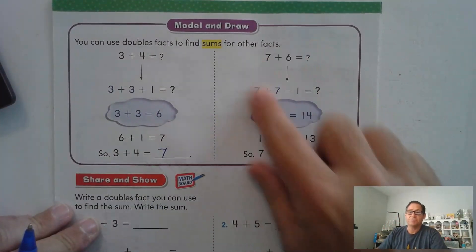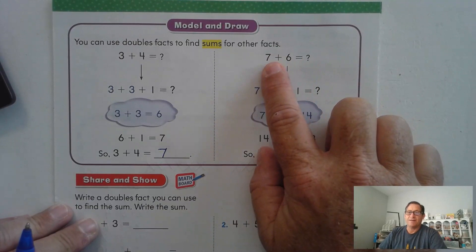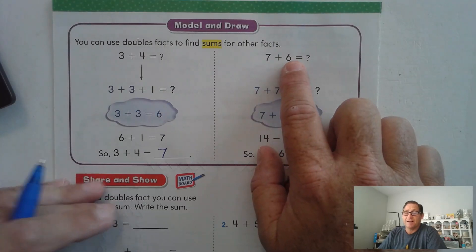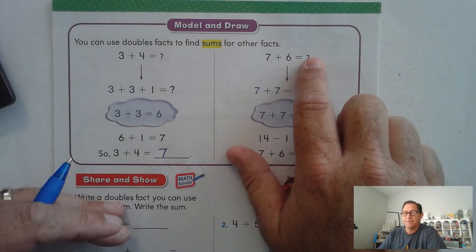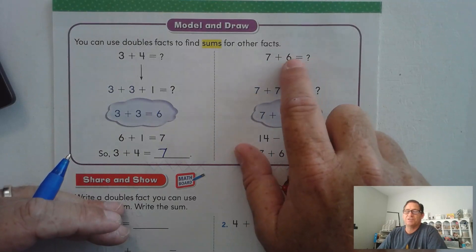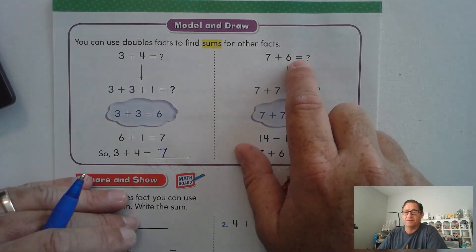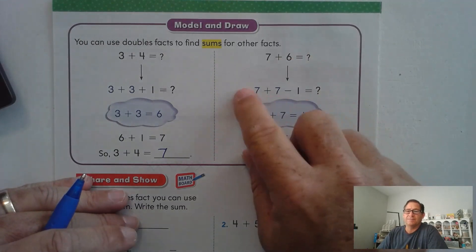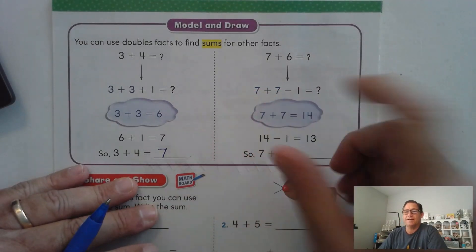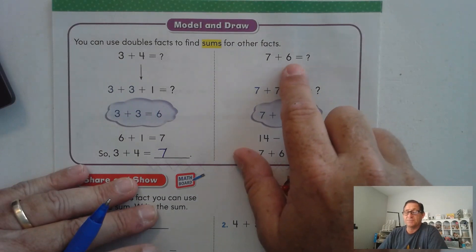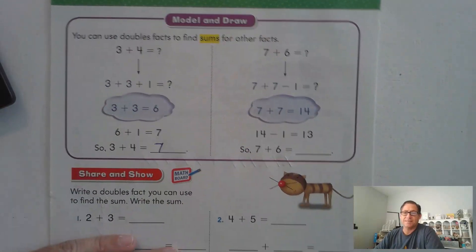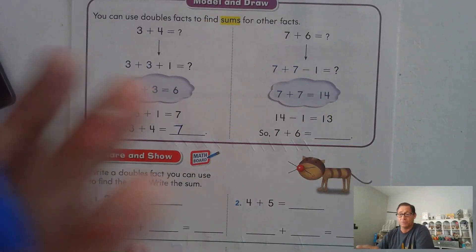We can also actually subtract. We could say, let's double the 7 — in a sense I'm changing the 6 to 7. But then the problem is not 7 plus 7, so I have to subtract that 1 that I added. The only reason we're changing this to a double is that 7 plus 7 is an easy double — it's 14. Take away the extra 1 and we get 13. Or I could do 6 plus 6 plus 1. Whatever makes the most sense to you — realize that you can add or subtract with double facts.